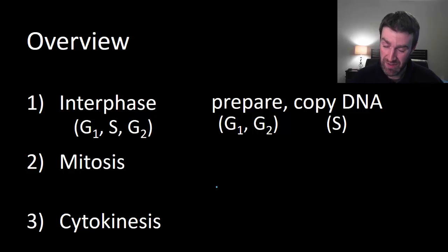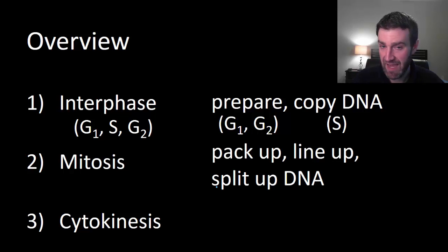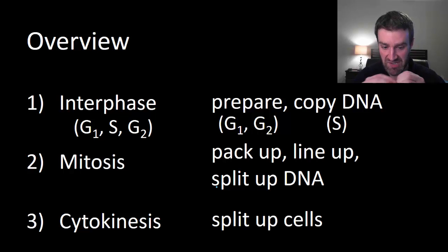We create a whole new copy of DNA while it's unpacked. Then in mitosis we're gonna pack it up to organize it, line it up, and then we can split it up equally. In cytokinesis we split up the cell to actually make our separate cells, hopefully with the right amount of DNA inside.